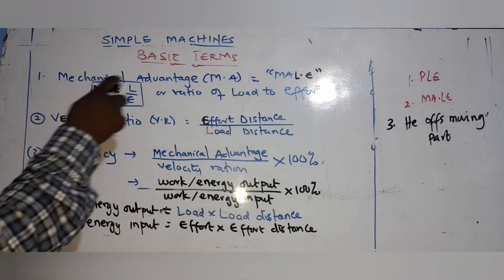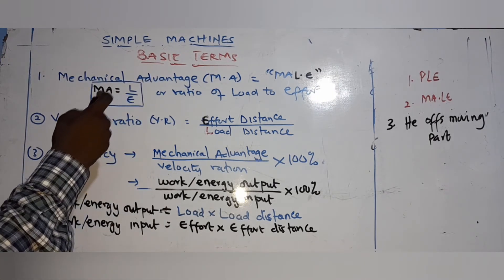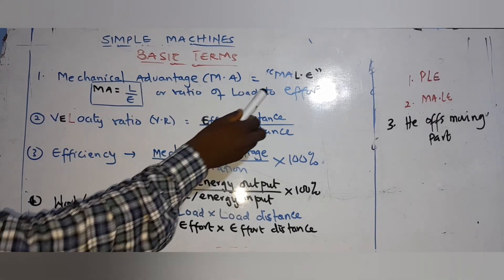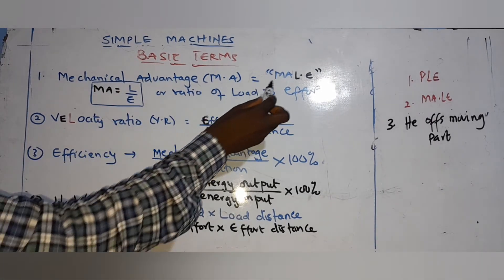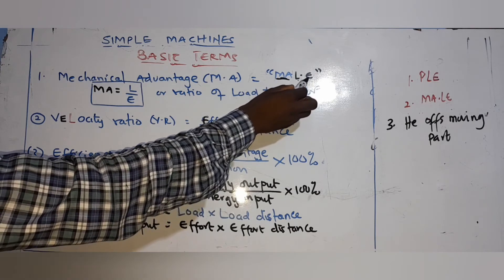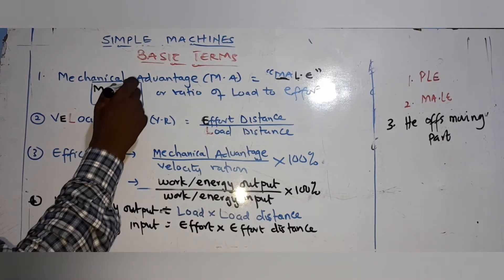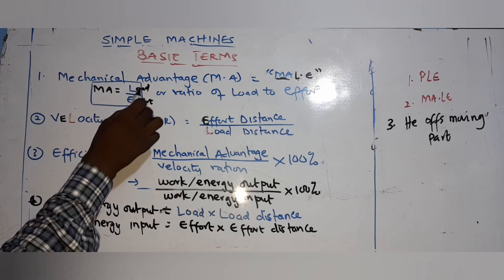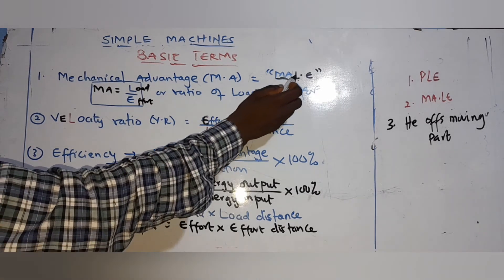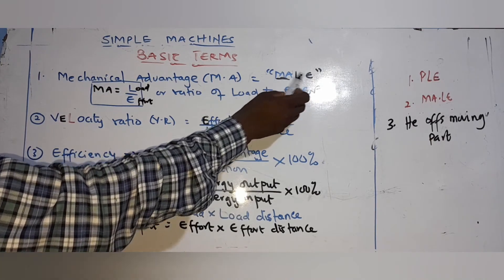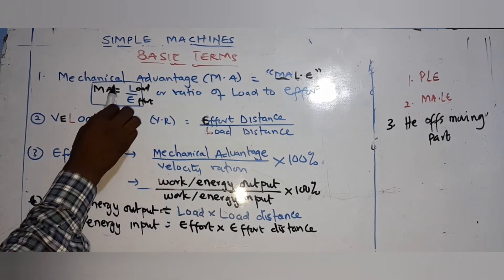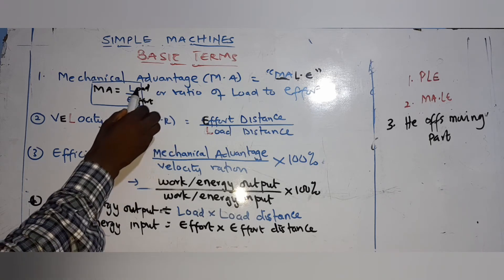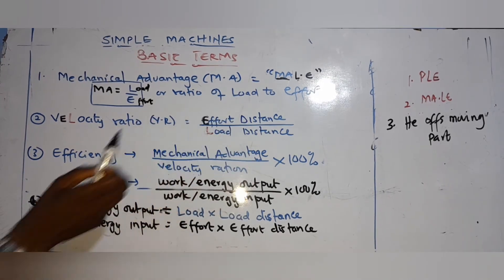Now let's look at the second mnemonic — basic terms in machines. We have mechanical advantage. Remember 'MAIL': MA is mechanical advantage, so it means Load over Effort. Mechanical advantage equals load divided by effort. Some students write effort over load — that is wrong. If you remember the mnemonic MAIL, load comes before effort: load over effort.